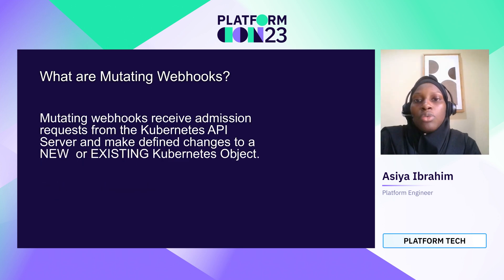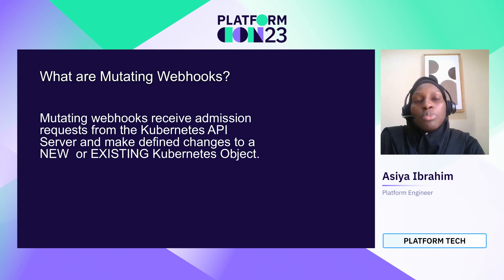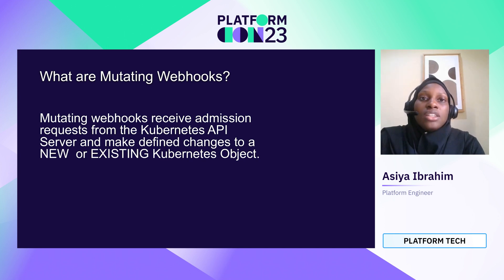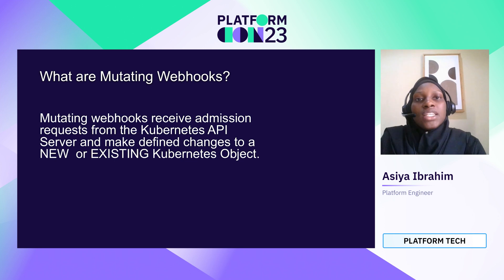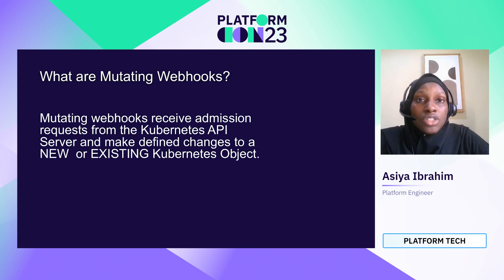A mutating webhook is more proactive in the sense that it doesn't just stop the resource from being created — it checks if a parameter is there and then does something, like adding the label. So it checks if the label is there, validates it, and then adds the label if it's not there and allows the resource to be created on the cluster.